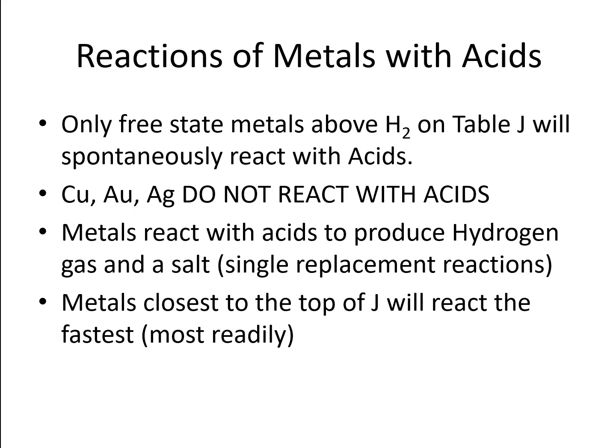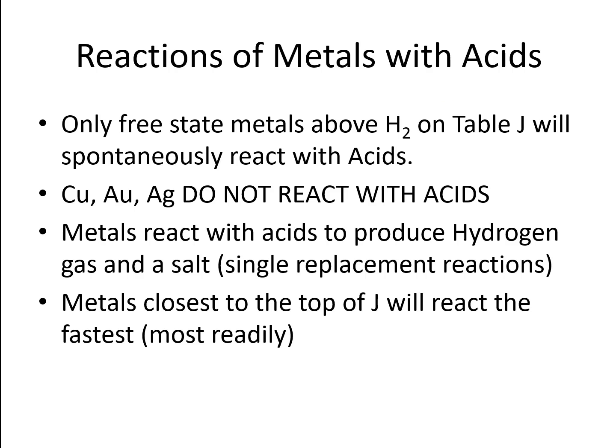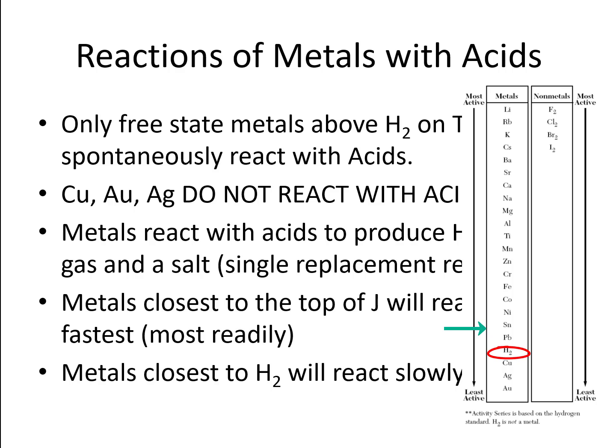Because Table J is ordered in strength of reactivity with your most reactive substances being at the top, those metals at the top of Table J will react the fastest or the most readily with acids. And that's something I'm going to have you looking at in another assignment. So that means the metals that are down closest to hydrogen will react the most slowly, and those below hydrogen will tend not to react at all.